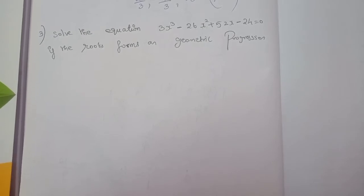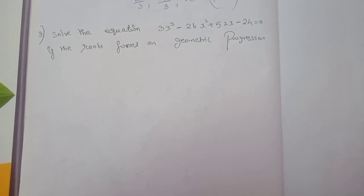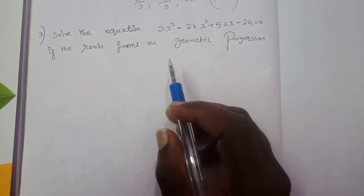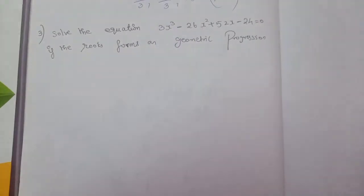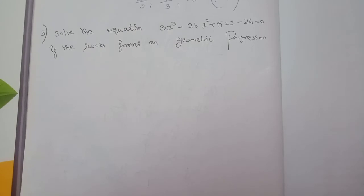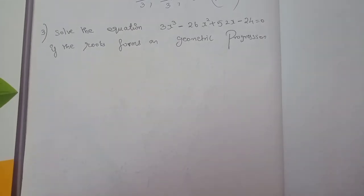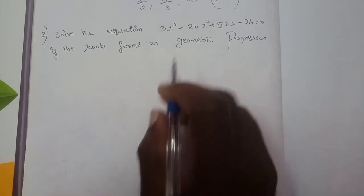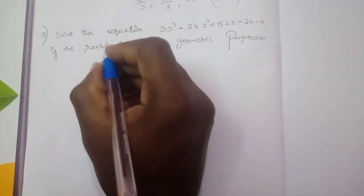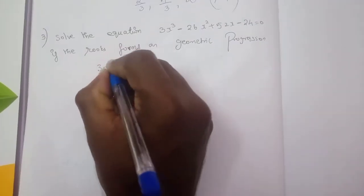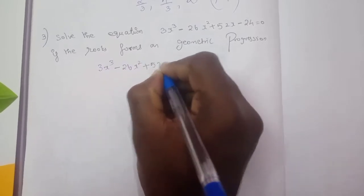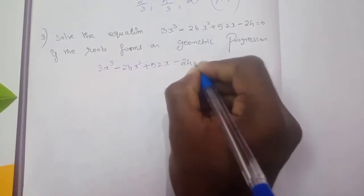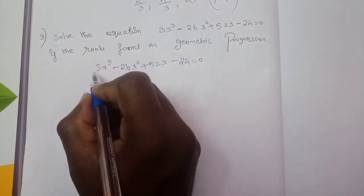Question number 3: Solve the equation 3x³ - 26x² + 52x - 24 = 0, if the roots are in geometric progression. So we have the cubic equation 3x³ - 26x² + 52x - 24 = 0.